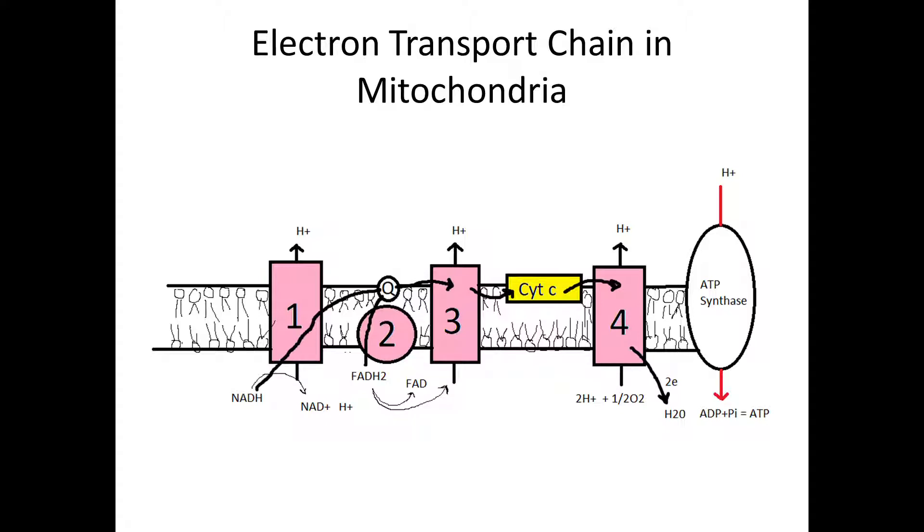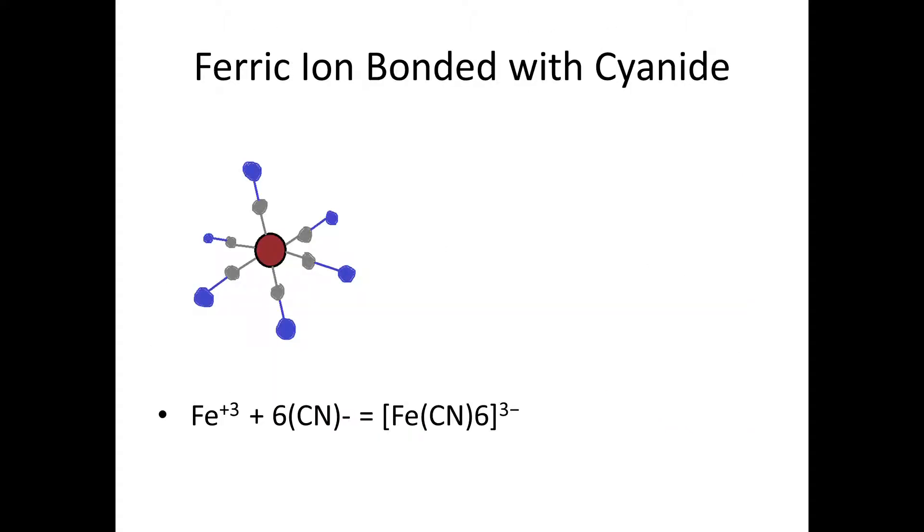However, cyanide attaches onto one of the electron acceptors, the ferric ion. As a result, the electron acceptor gets surrounded by cyanide ions, and the charge goes from positive to negative, so electrons no longer want to attach to the ferric ion, which prevents formation of water.